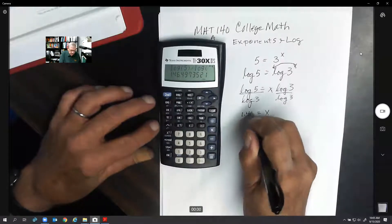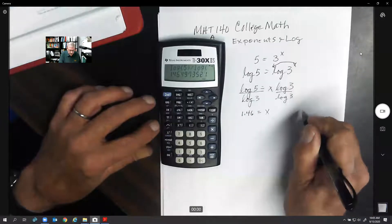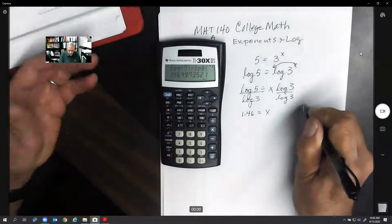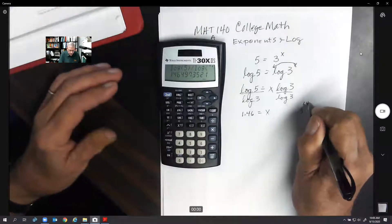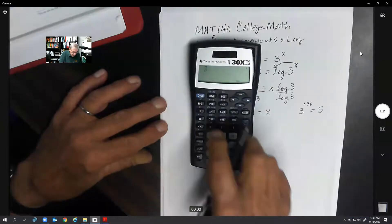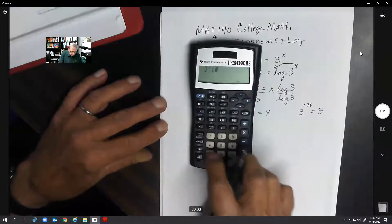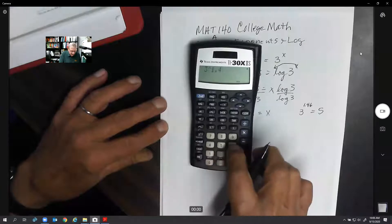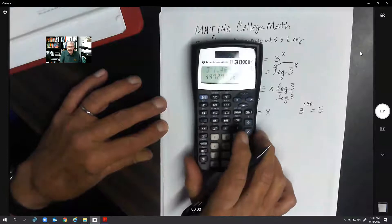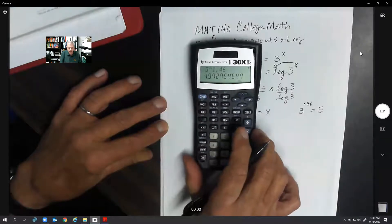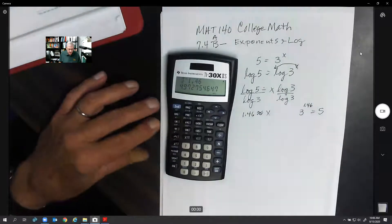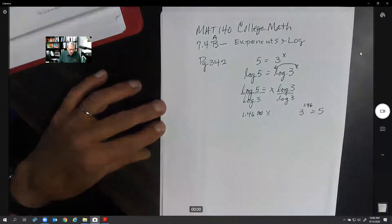1.46. So what I'm saying is that if I took 3 and I raised it to this weird number, 1.46, I should get 5. Let's see if it works. 3 raised to the 1.46. I might not get exactly 5, but it should come pretty close. 4.97. Pretty close to 5. So this is an approximate answer. It's not exact, but it's close.